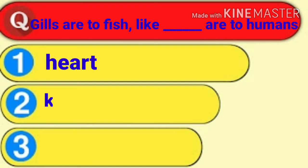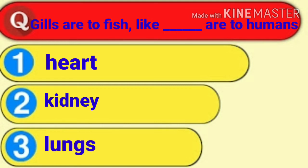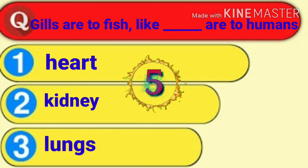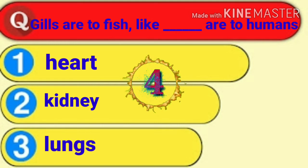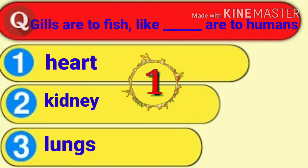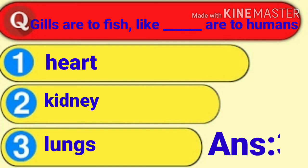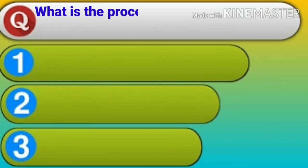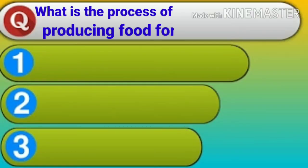Gills are to fish like blank are to humans. Number one: heart. Number two: kidney. Number three: lungs. You have five seconds to try yourself. The answer is third — lungs.